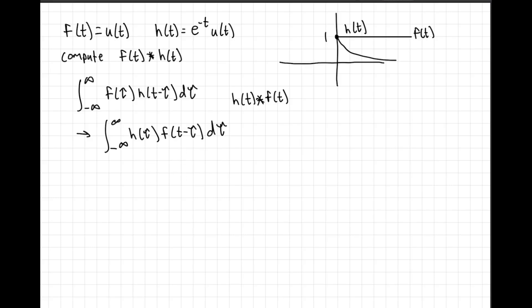Let's go ahead and plug in the values here. We have the integral from negative infinity to infinity of h, so e to the negative tau, u multiplied by f, u. This is looking pretty good.